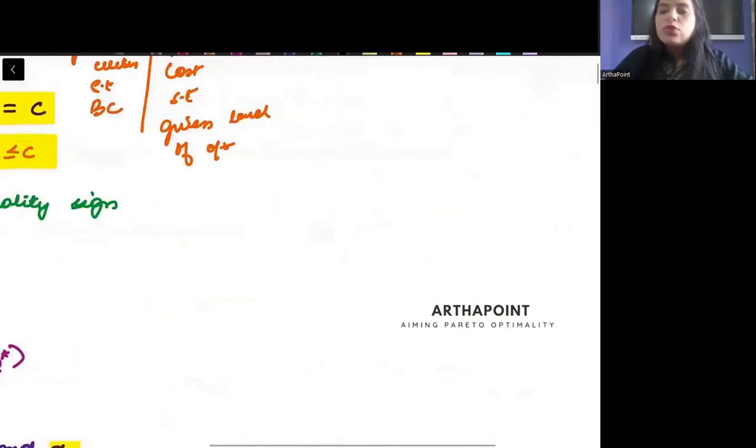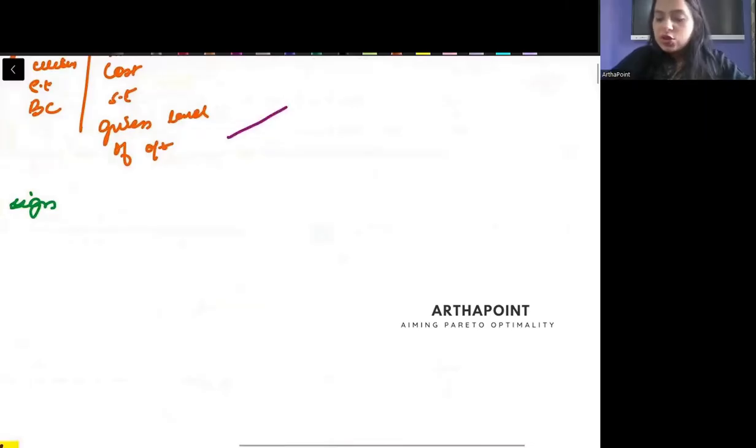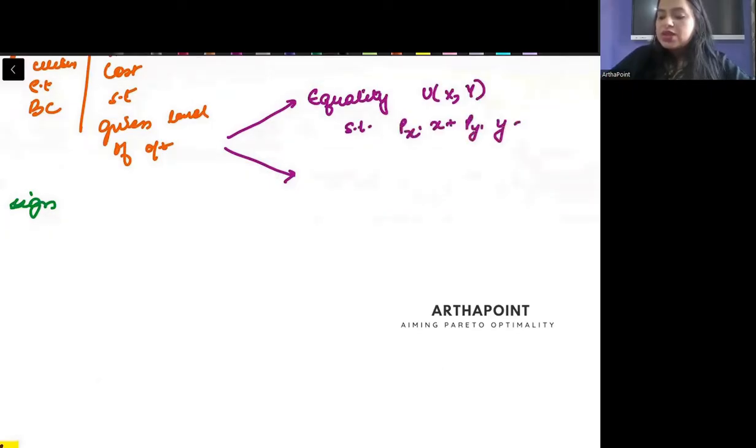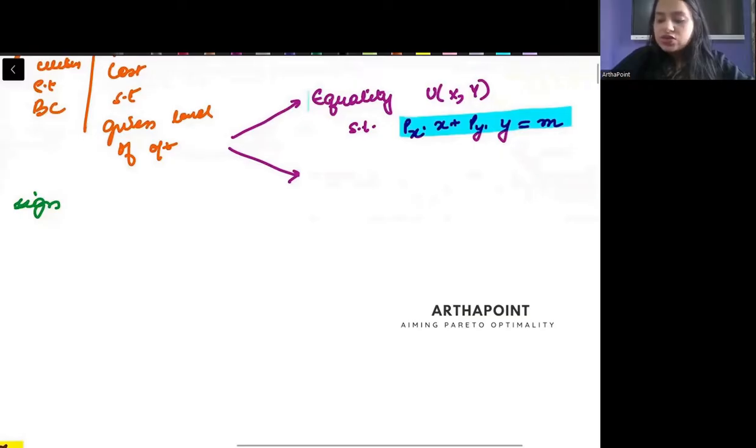Now, when we talk about constrained optimization, there are two kinds of constraints that you can see. One is called an equality constraint. Equality, if I ask you, maximize your utility subject to px into x plus py into y equals income, subject to your budget line. This is an equality constraint.